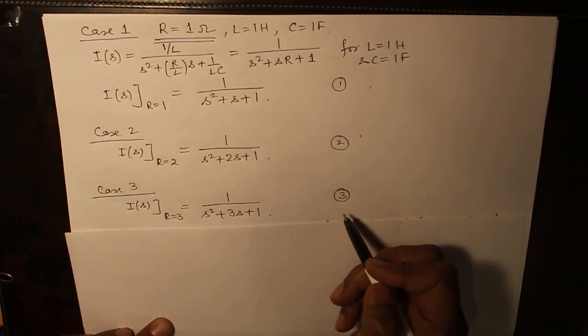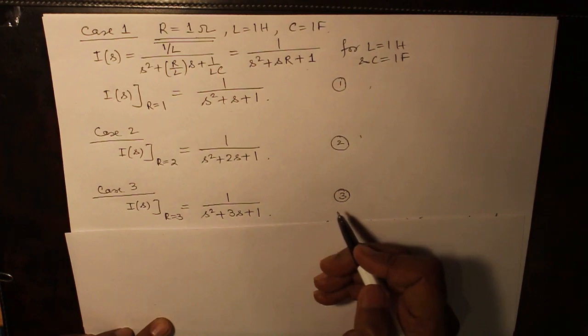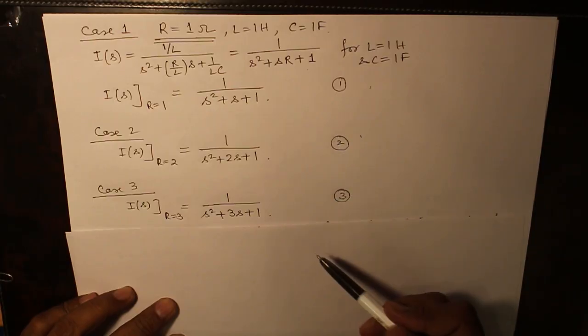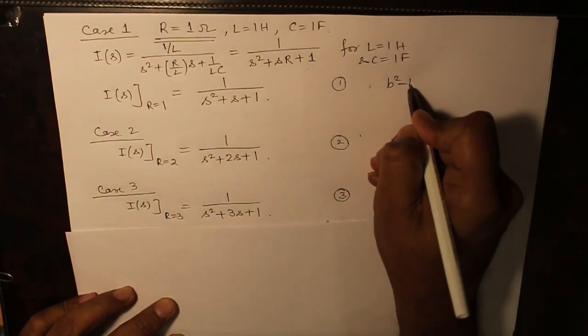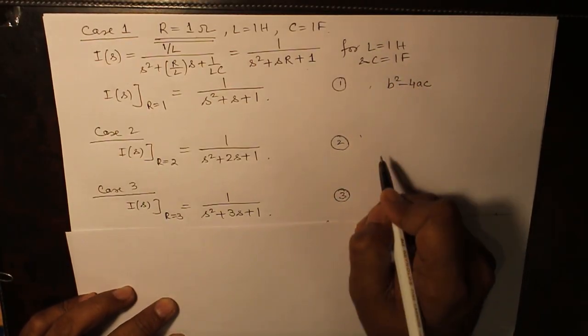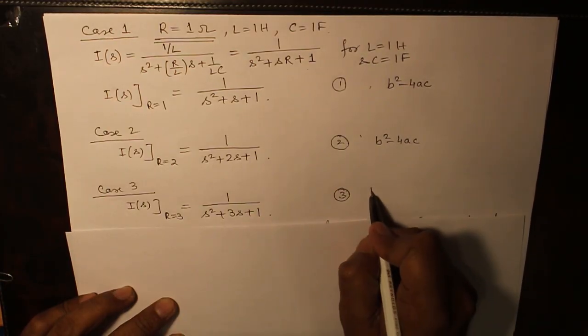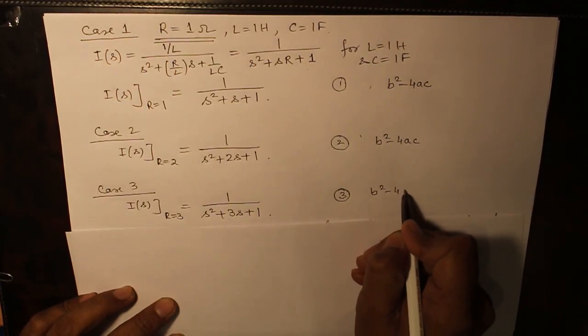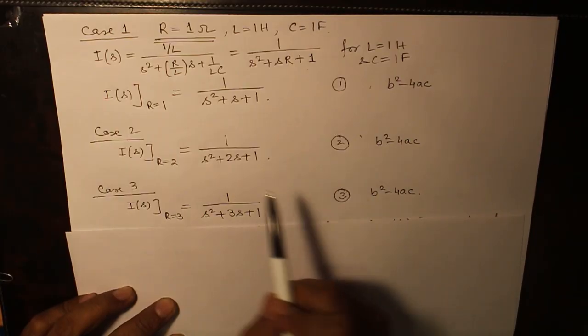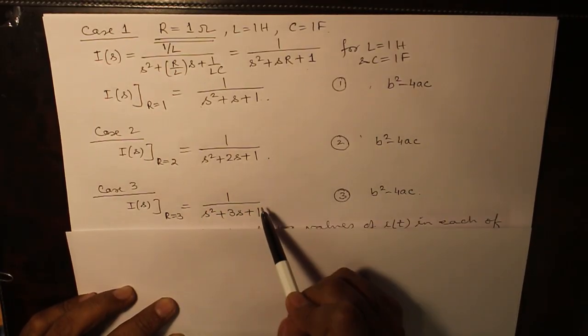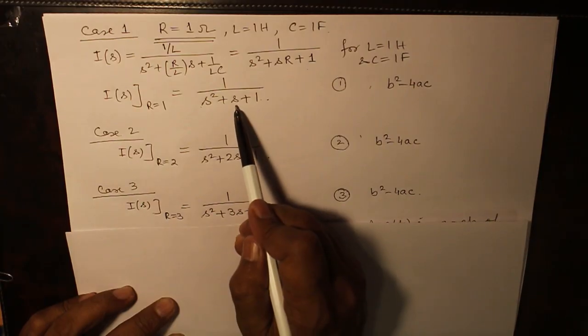For each of the three cases, we are going to determine the value of I(t). Now, let's investigate what is the difference between each of them. What is the value of B² minus 4AC here? A is 1 in each of the case. C is 1 in each of the case. Only the value of B is varying.